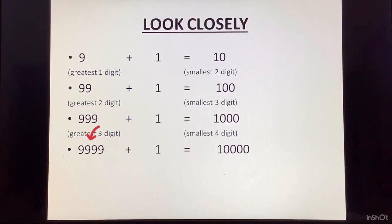Now, when we see 9,999 and we add 1 to it, we get 10,000. Now, this is the greatest four digit number. And by adding 1, we have entered the five digit series. And we have got the smallest five digit number.